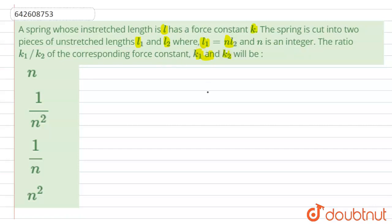Now first, we know the force constant K1 equals C upon L1, where C is a constant. Similarly for K2, K2 will be equals to C upon L2.